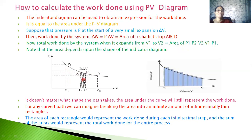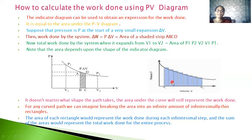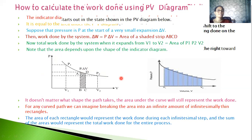The total work done by the system when it expands from V1 to V2 is equal to the area of the region P1, P2, V2, V1, P1 — the area under the curve. This area depends on the shape of the indicator diagram. For any curved path, we can imagine the area divided into a large number of small rectangles; the sum of their areas represents the total work done for the entire process.